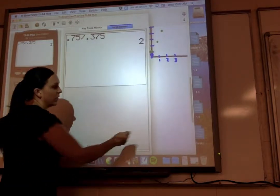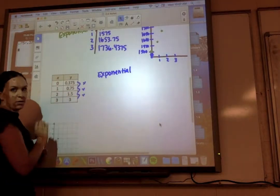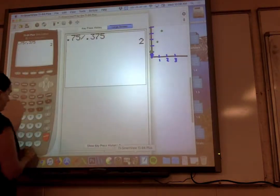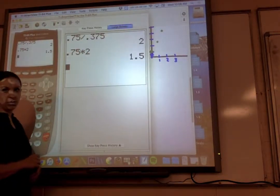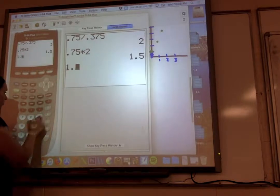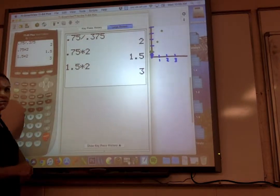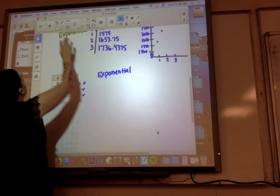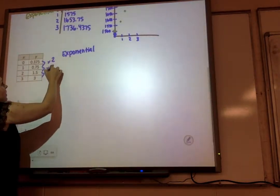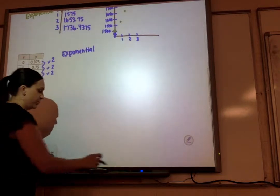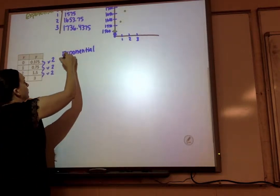So it looks like I'm multiplying by 2, and I can make sure that works. 0.75 times 2, that gives me that 1.5. 1.5 times 2 gives me that 3. So we are multiplying by 2 every time. So it's exponential.